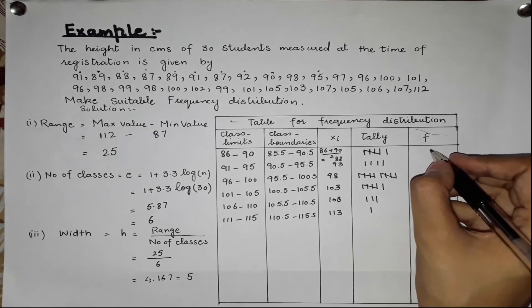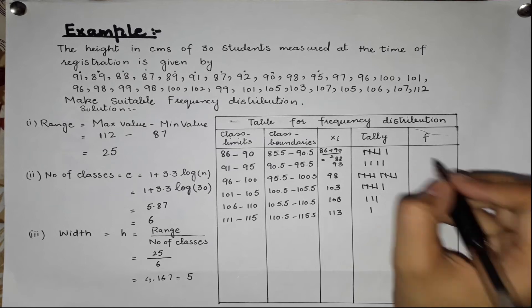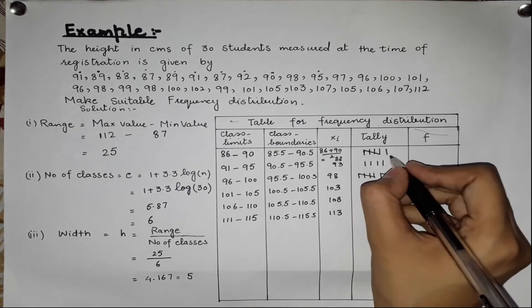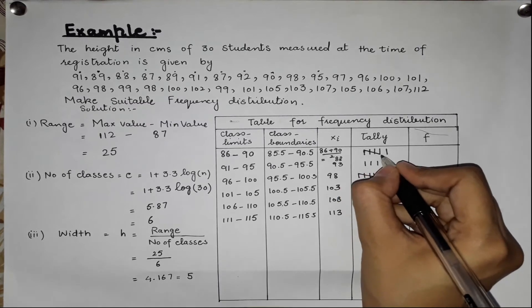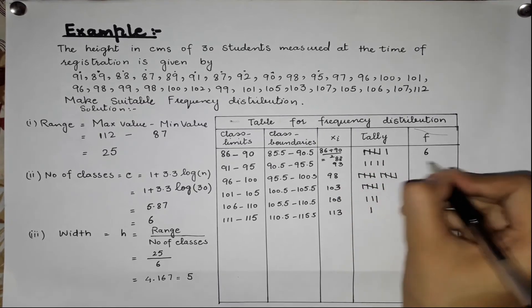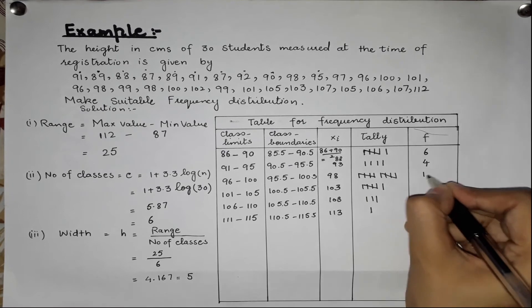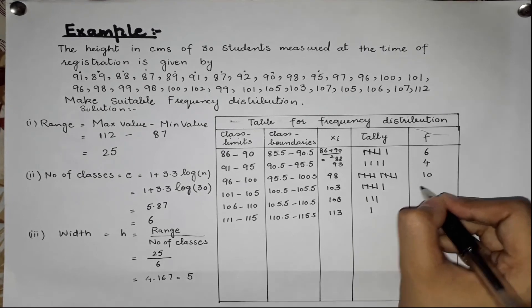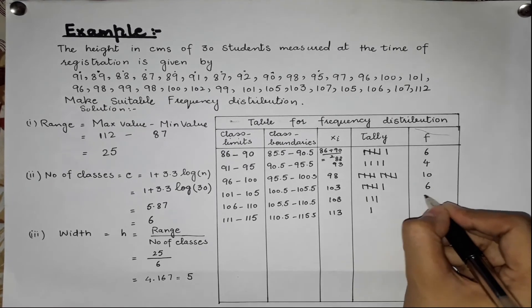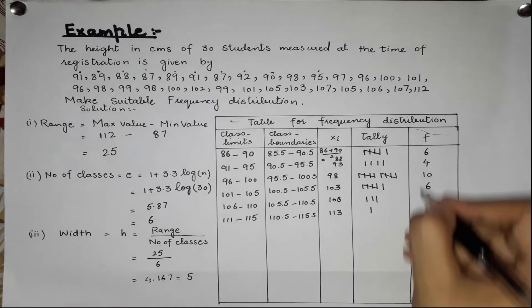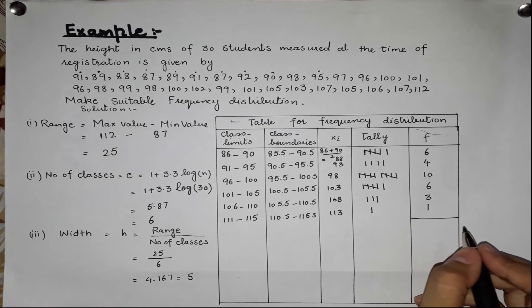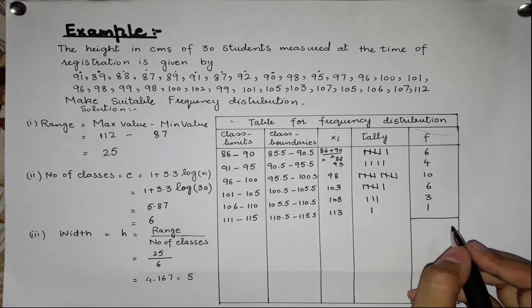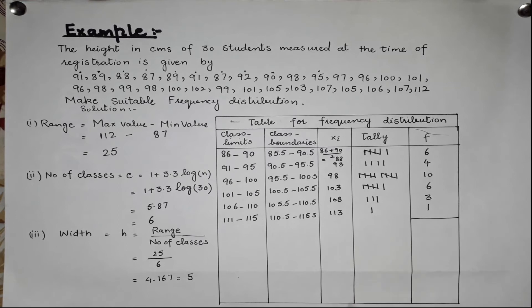Now it is called Frequency. We count the tally marks to get the frequency. The frequencies are: 6, 5, 10, 6, 6, 3, and 1.